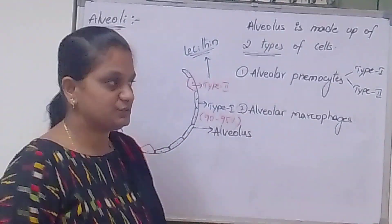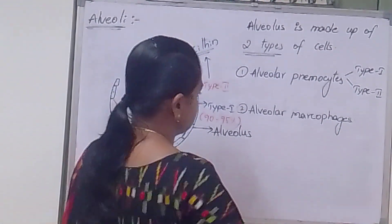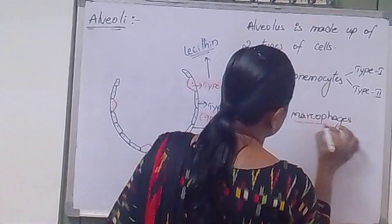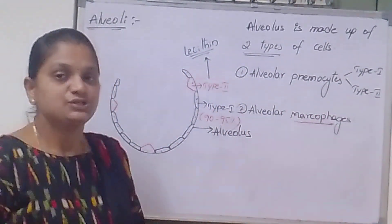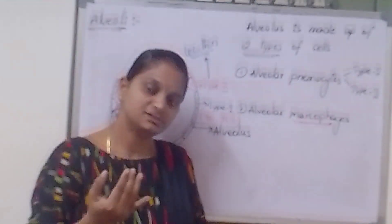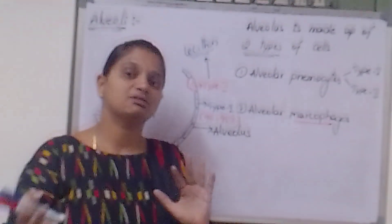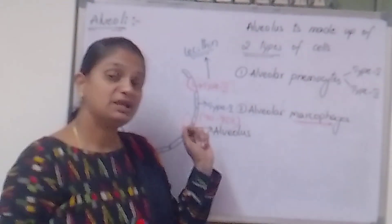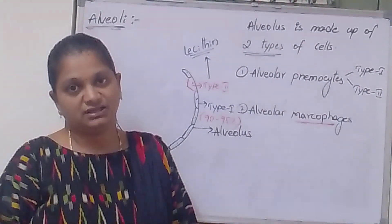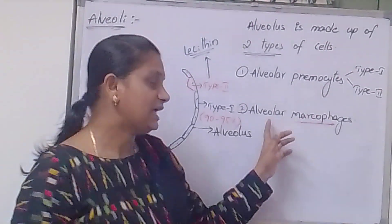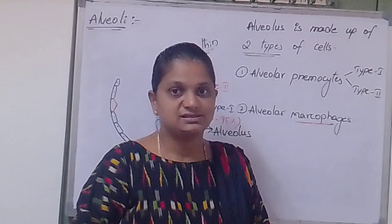Along with pneumocytes, alveolar macrophages are also present. These macrophages are fighting cells. If a pathogen enters the lungs and crosses the trachea's ciliated epithelium to reach the alveoli, the alveolar macrophages destroy these antigens or pathogens. They are also known as dust cells.